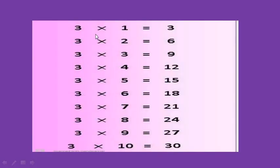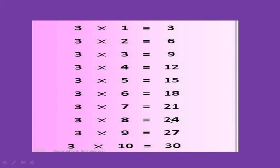Table of three. Three one the three. Three two the six. Three three the nine. Three four the twelve. Three five the fifteen. Three six the eighteen. Three seven the twenty-one. Three eight the twenty-four. Three nine the twenty-seven. Three ten the thirty.